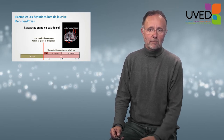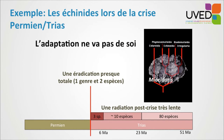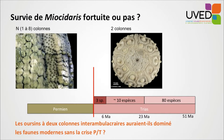Another example: urchins during the Permotrias crisis, showing that adaptation is very difficult. During the Permian era there were many urchins, and then they were almost eradicated during the crisis. Only one genus and only two or three species survived. The first post-crisis radiation was very long — 23 million years later there were 10 species, and 50 million years later, 80 species.